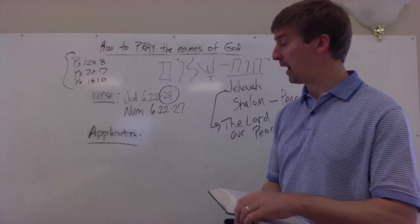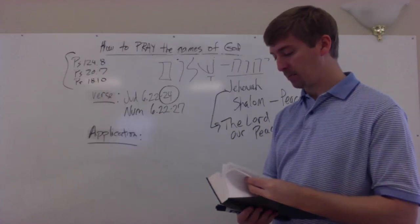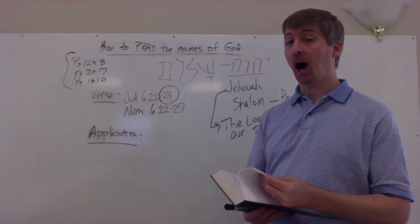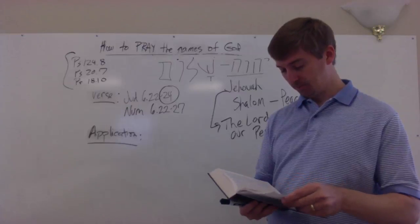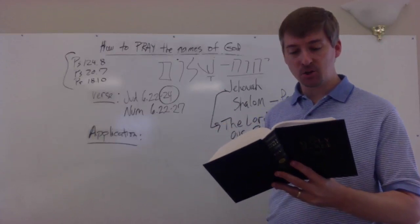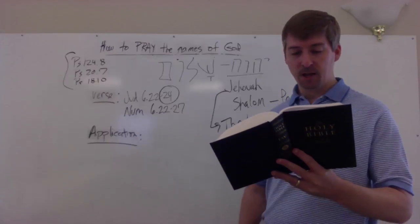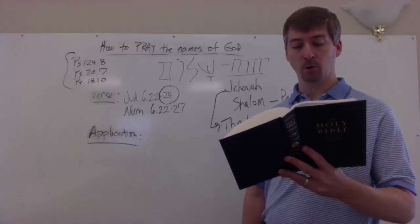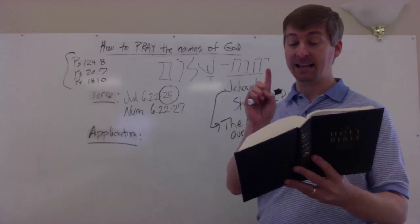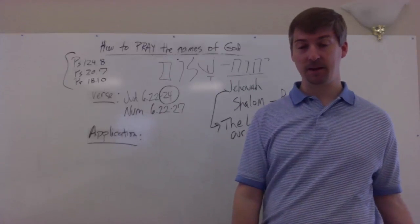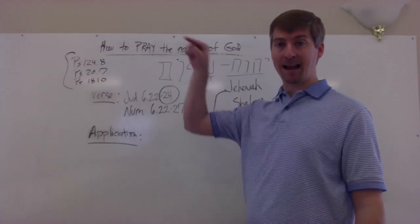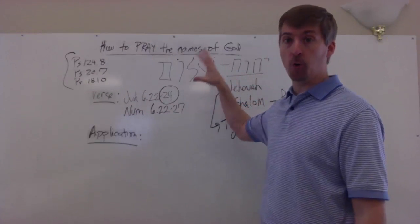In Numbers, it's a few books back, you have what's called the Aaronic Blessing. The Lord spoke to Moses saying, Speak to Aaron and his sons and say, Thus you shall bless the people and say to them, The Lord bless you and keep you. The Lord make his face to shine upon you and be gracious to you. The Lord lift up his countenance upon you and give you peace. Listen to this. So they shall put my name upon the people and I will bless them. So what does he say? He says, Peace be upon you. And the Lord says, By doing that blessing, you're putting my name on them. You're putting the name Jehovah Shalom on those people.